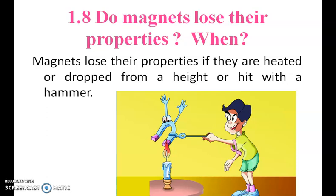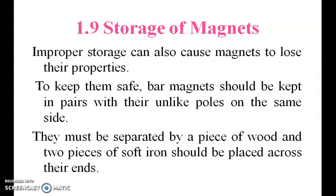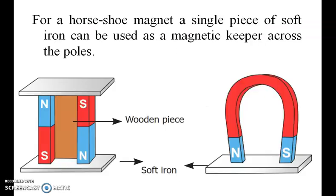Do magnets lose their properties? Yes, if they are heated, dropped from a height, or hit with a hammer, magnets can lose their magnetic power. To preserve magnets, bar magnets should be kept in pairs with their unlike poles on the same side, separated by a piece of wood, with two pieces of soft iron placed across the ends.